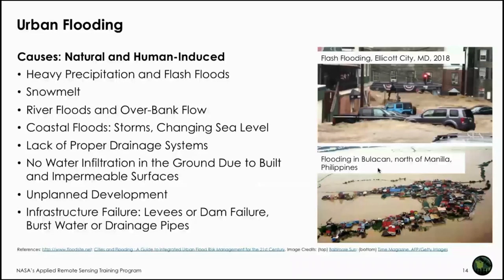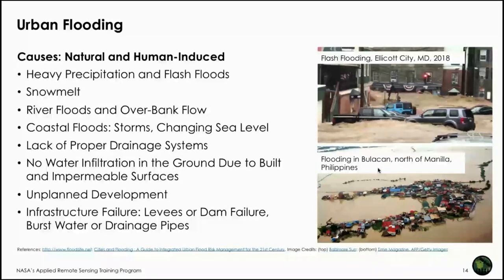What are the causes of urban flooding? Flooding anywhere occurs because of excessive rainfall, but in urban flooding there are both natural and human-induced causes. Heavy precipitation can cause flash floods anywhere, and snow melt runoff can inundate surfaces. Urban areas close to a river can flood even without local heavy rain — if upstream there is heavy rain and river flow overflows its banks, overbank flow can inundate nearby urban areas.